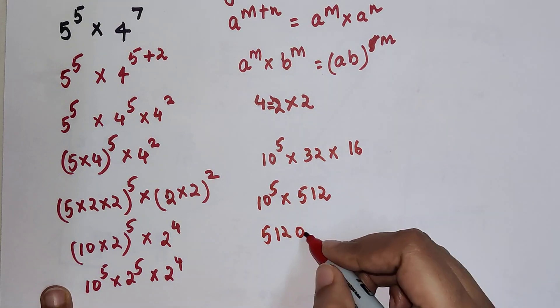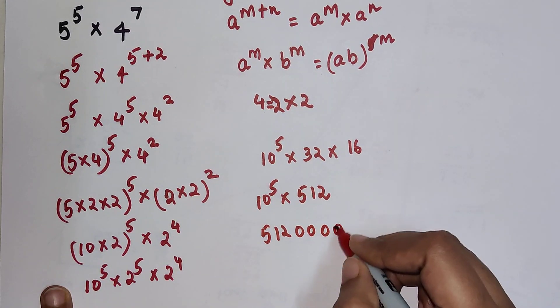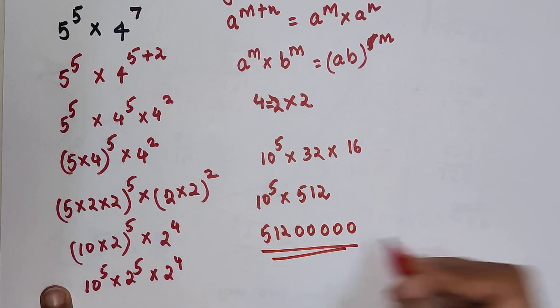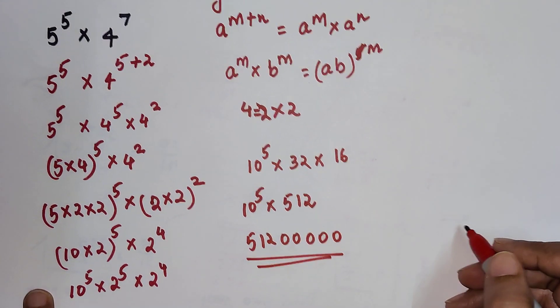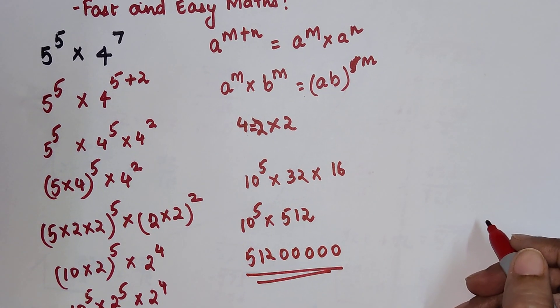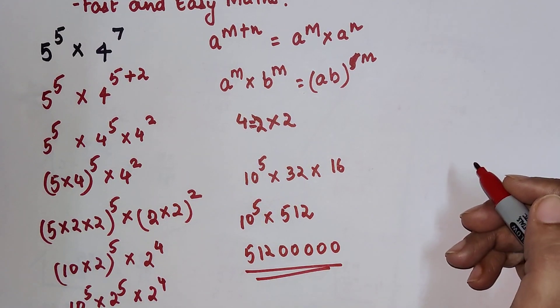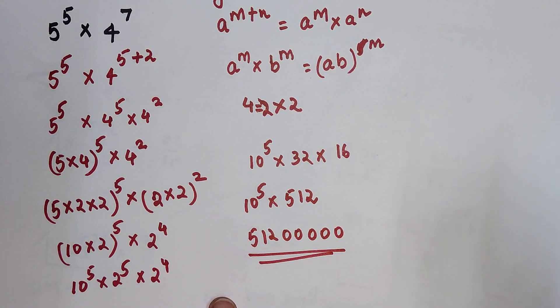And then multiplied by 10 raise to 5 means just adding 5 zeros after 512. So that is your answer. Do like and subscribe for many such videos.